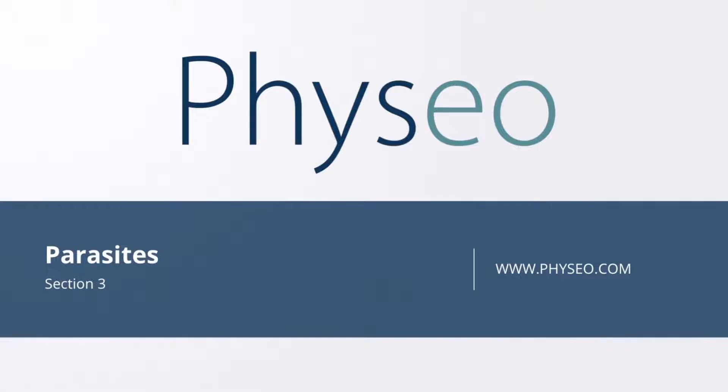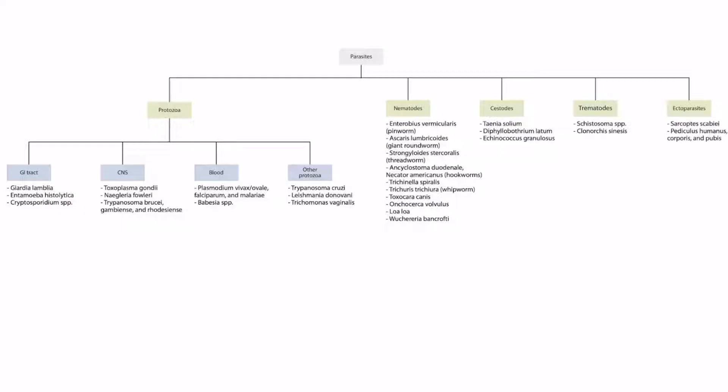Welcome to section three of the parasites. This is our overview figure showing the parasites you need to know for step one. In this lecture, we will be talking about the third GI protozoan: cryptosporidium.